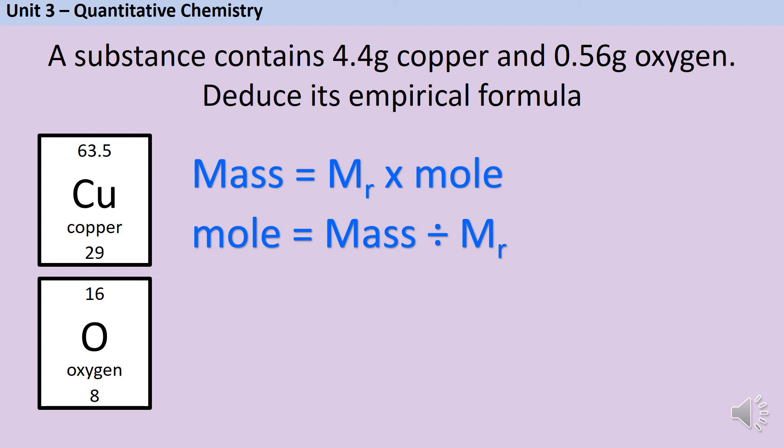Here we have a substance that contains 4.4 grams of copper and 0.56 grams of oxygen. So again I need my periodic table squares and my mass is mr mole formula. I do 4.4 grams divided by 63.5 grams per mole to get 0.0693 moles. Now I've had to round this because otherwise it wouldn't fit on the screen, but as far as you can when doing quantitative chemistry, don't round until the very last minute.